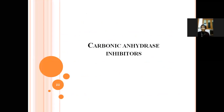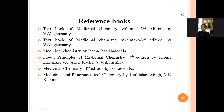In summary, in previous classes we discussed carbonic anhydrase inhibitors and thiazides. Today we discussed loop diuretics, osmotic diuretics, and potassium-sparing diuretics. These are the classifications of drugs which come under diuretics.